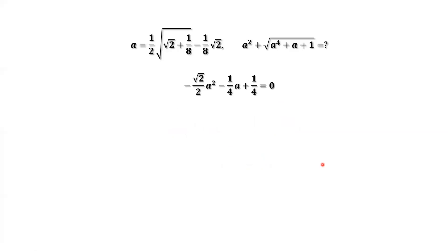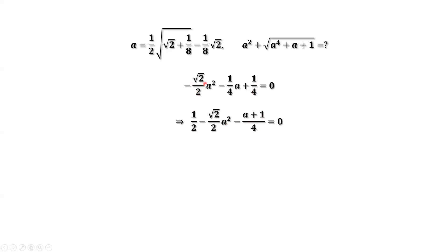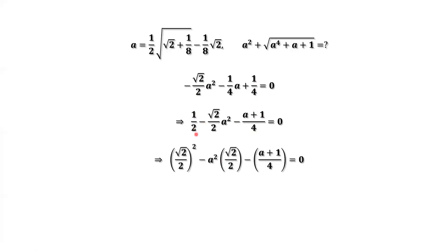Multiply both sides by negative one. We get this result: one-fourth equals one-half minus one-fourth. The left-hand side can be rewritten accordingly. Note that one-half equals square root of two over two, squared.